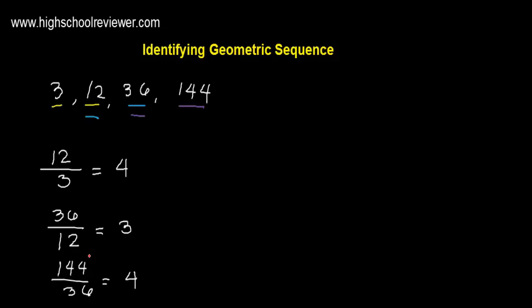As you may have noticed, the ratio of 3 here is different from the two 4s that we obtained. Since 3 is different, we do not have a common ratio. And since we do not have a common ratio, this set of numbers is not a geometric sequence.